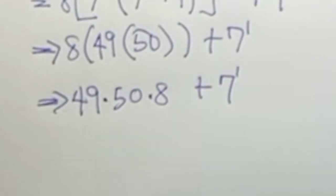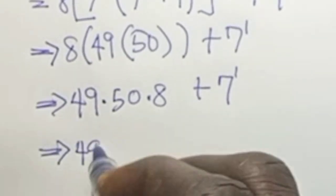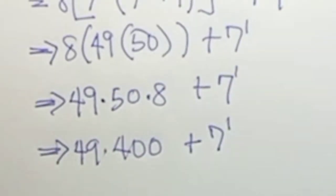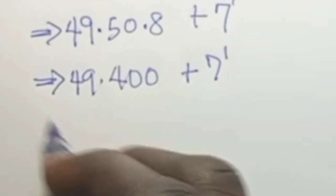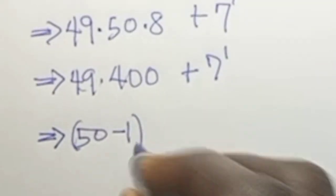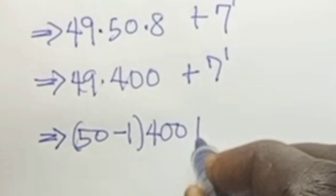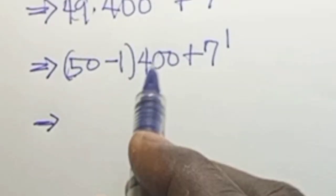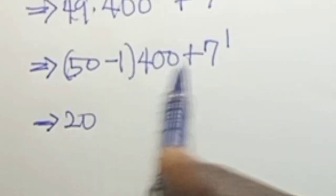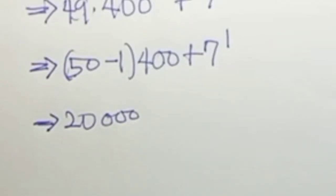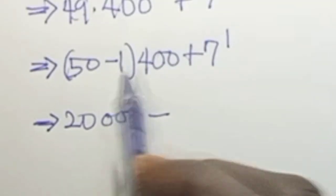So we can rewrite this as 49 times 50 times 8, plus 7 to the power of 1. This equals 49 times 400, plus 7¹. We then write 49 as 50 minus 1, giving us 50 minus 1 times 400, which expands to 20,000 minus 400, plus 7.